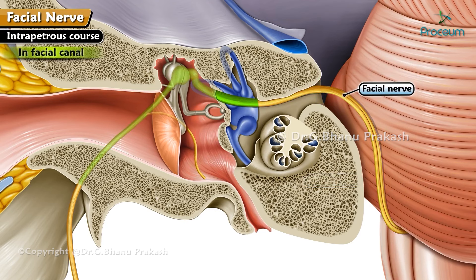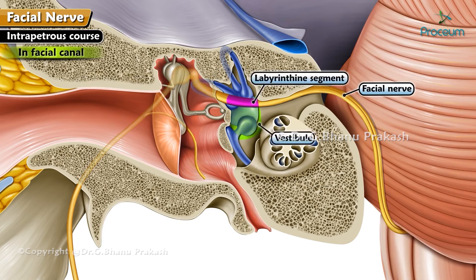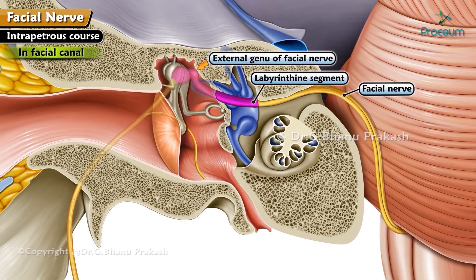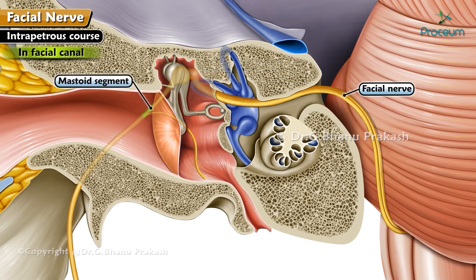The course in the facial canal is divided into three segments. The labyrinthine segment runs above the vestibule of the internal ear to reach the anterior end of the medial wall of the middle ear, where it takes a sharp abrupt bend called the external genu of the facial nerve. The tympanic segment is the horizontal segment that runs posteriorly in the medial wall of the middle ear to reach the posterior end. The mastoid segment is the vertical segment that begins from the posterior end of the medial wall of the middle ear and runs vertically downwards to reach the stylomastoid foramen.